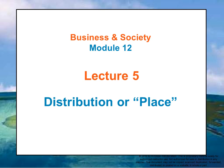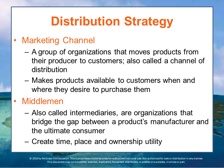Let's start by talking about another part of the marketing mix: distribution, or where and how to place the product. The best products in the world will not be successful unless companies make them available where customers want to buy them. A marketing channel, or channel of distribution, is a group of organizations that moves products from their producers to the customers. Marketing channels make products available to buyers when and where those customers desire to purchase.